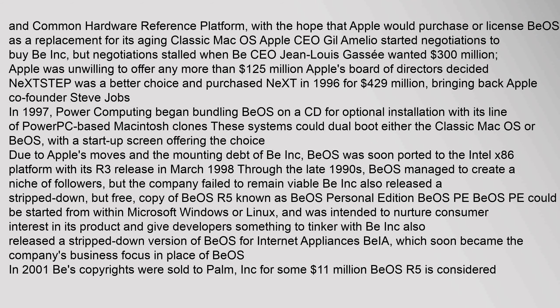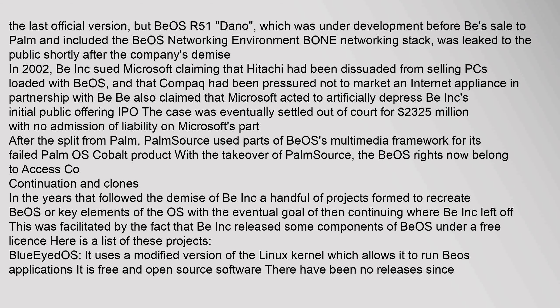BeOS PE was intended to nurture consumer interest in its product and give developers something to tinker with. Be Inc. also released a stripped-down version of BeOS for internet appliances, which soon became the company's business focus. In 2001, BeOS copyrights were sold to Palm Inc. for some $11 million. BeOS R5 is considered the last official version, but BeOS R5.1, which was under development before the sale to Palm and included the BeOS networking environment Bone networking stack, was leaked to the public shortly after the company's demise in 2002.